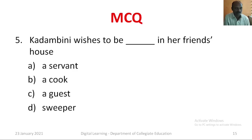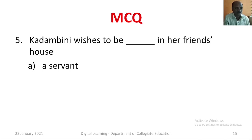Question number five: Kadambini wishes to be blank in her friend's house — Option A: A servant. Option B: A cook. Option C: A guest. Option D: A sweeper. The correct answer is Option A, a servant.